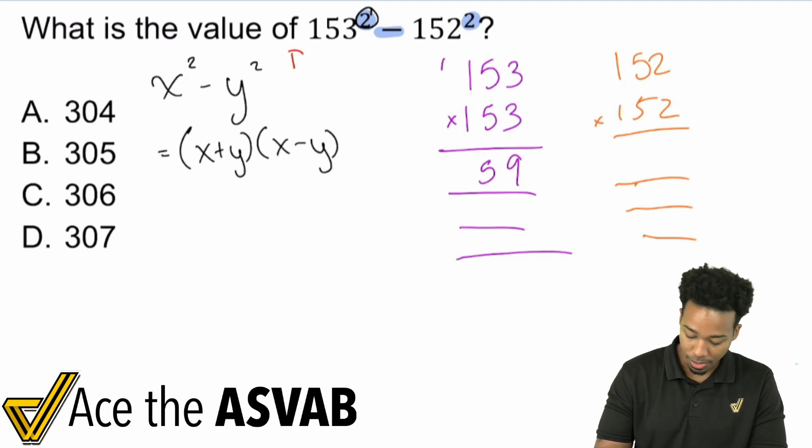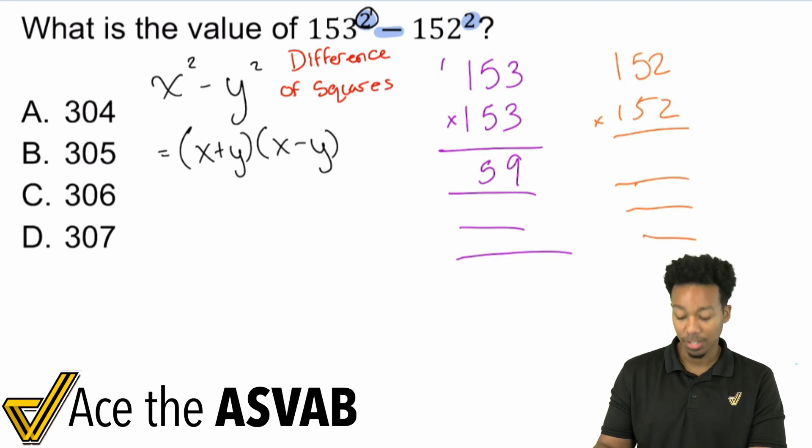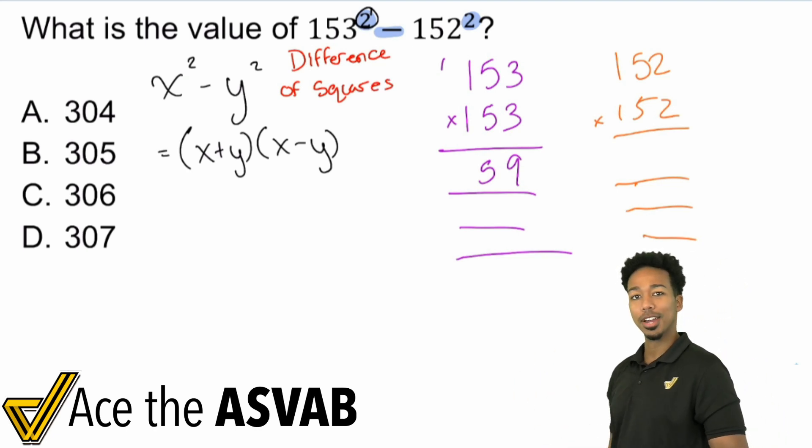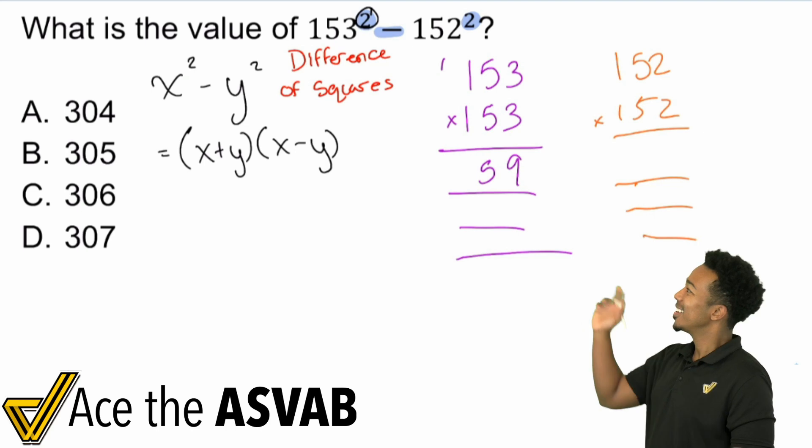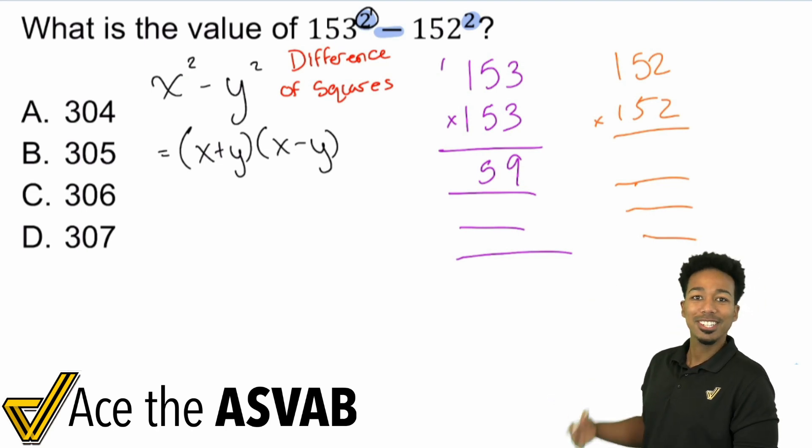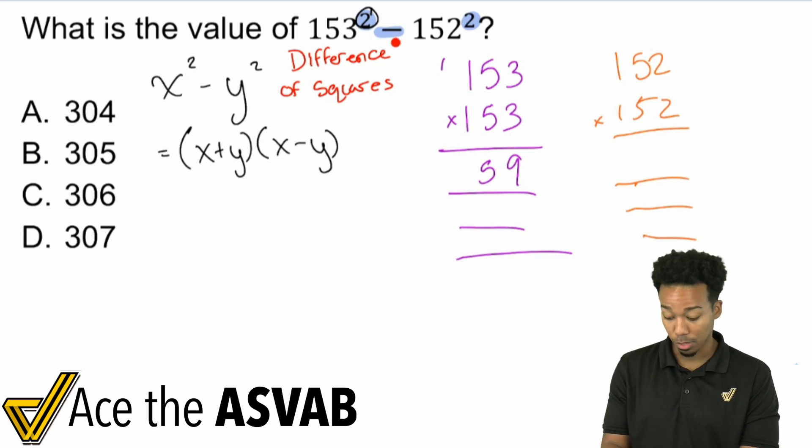That turns into X plus Y times X minus Y. Again, this is called the difference of squares. The difference of squares. So mind my handwriting, obviously I'm not the best, but there we have it. And so this idea is going to help you out. This is largely used with polynomials, but you can use this with numbers as well because you have a difference, again, subtracting, difference, subtracting squares, two numbers being squared.